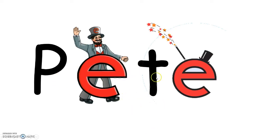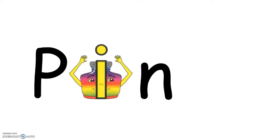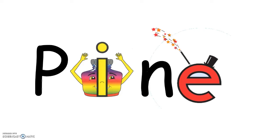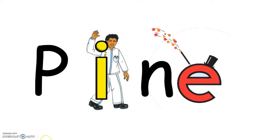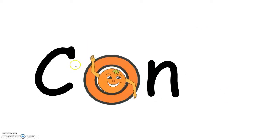Now we've got 'pin' — a CVC word. When magic E appears, the short vowel disappears and Mr. I comes in, so it becomes 'pine.' Magic E does not say anything.